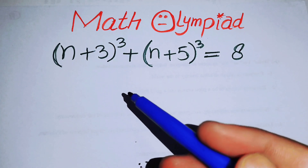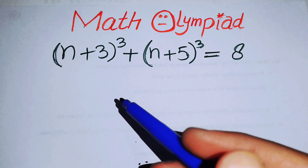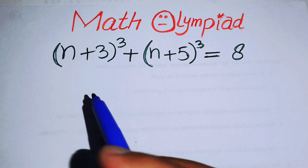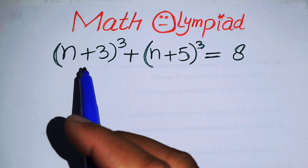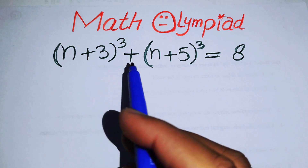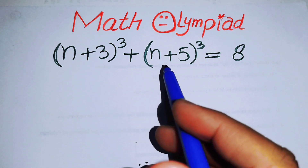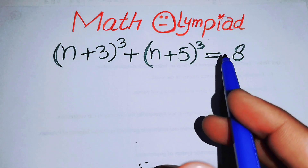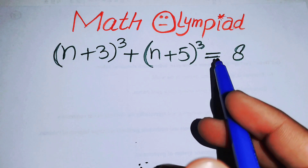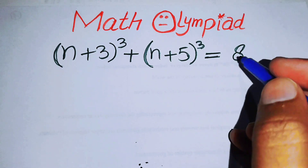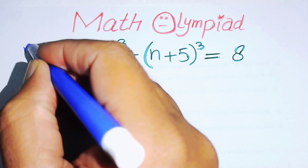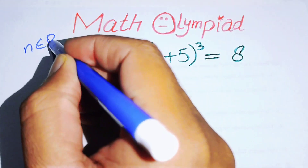Hello everyone, welcome back to the Map of Mathematics. In this video we are going to solve this nice algebra problem: (n+3)³ + (n+5)³ = 8. We will solve this problem for the real values of n.